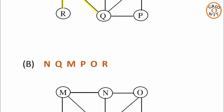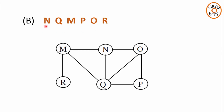Now let us check the traversal sequence given in option B. First, node N is traversed. Now the direct neighbors of node N are M, Q and O. These 3 direct neighbors of node N should be traversed first in any order before going to the next level of neighbors. In the traversal sequence, next node is Q — no problem, Q can be traversed. Next node is M — again no problem, M will be traversed. Next node is node P. It is not possible to traverse node P in BFS traversal before traversing all the neighbors of node N; that is, P cannot come in the traversal sequence before nodes M, Q and O when the first node traversed is N. So the traversal sequence given in option B is wrong.